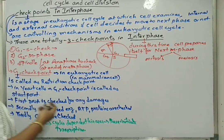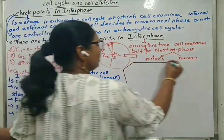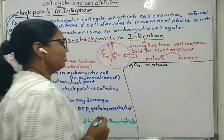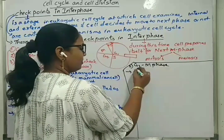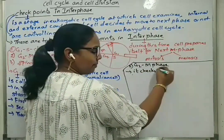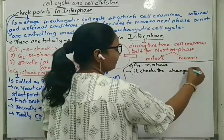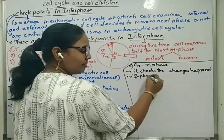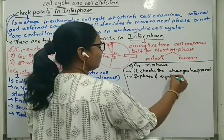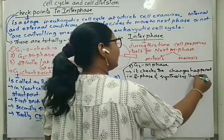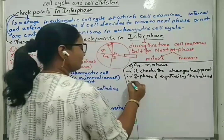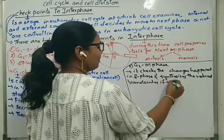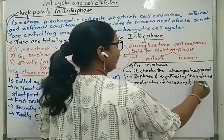Second one, G2-M phase. It checks the changes happened in S phase and synthesizes the required biomolecules like enzymes, proteins, etc. if necessary, and then moves to M phase.